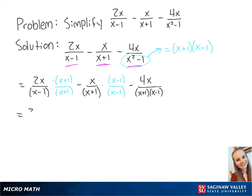When we multiply this out, this is going to give us 2x squared plus 2x over x plus 1 times x minus 1 minus x squared minus x over x plus 1 times x minus 1 minus 4x over x plus 1 times x minus 1.